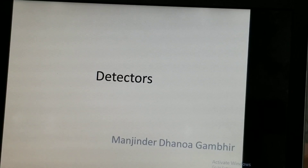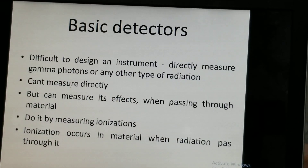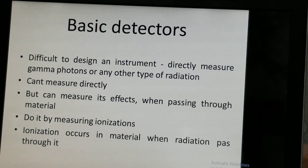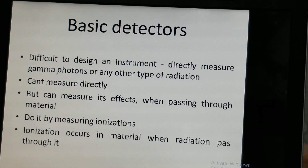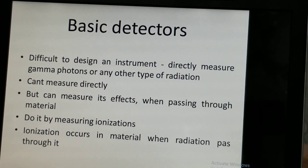Hello students, today's chapter is detectors. It is very difficult to design an instrument that can directly measure gamma photons or any other types of radiation like beta rays, gamma, X-rays, or alpha rays. We can't measure radiations or photons directly, but we can measure their effects when radiation passes through a material. We do this by measuring ionizations — ionization occurs in a material when radiation passes through it.